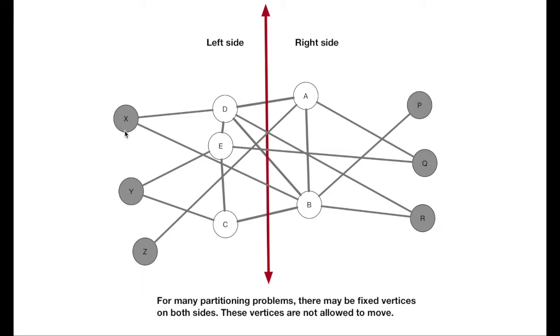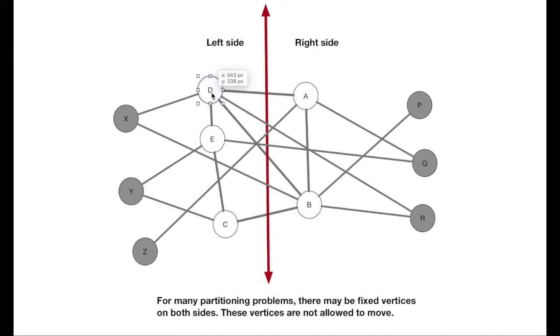For most partition problems, you'll also have fixed vertices. So you'll have some fixed vertices, x, y, z over here, that you're not allowed to move, p, q, and r over here, that you're not allowed to move, and things in the middle that are movable. And so the problem might have a bunch of vertices, only some of which you're allowed to move. And again, the goal is to have roughly half of them on either side, so things remain roughly balanced.